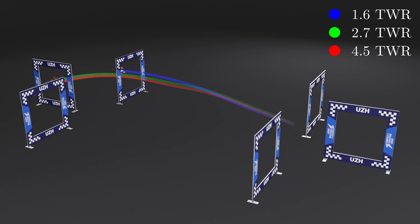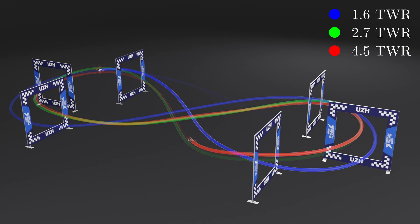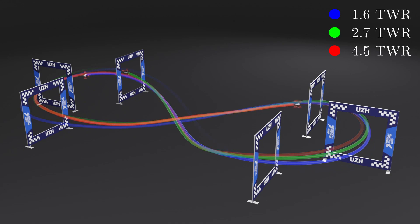We observe that the drones fly on different paths. This is important, as the fastest way to pass through all gates is also a function of the available thrust. Thus it is very reasonable that the drones behave a bit differently.